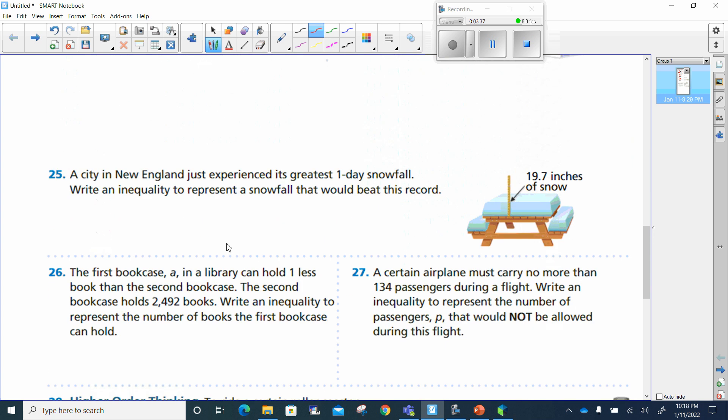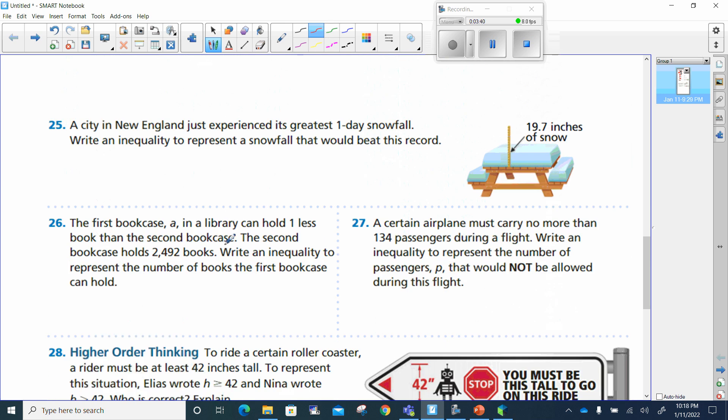All right, so let's move to number 25. A city in New England just experienced its greatest one-day snowfall. Write an inequality to represent a snowfall that would beat this record. Well, snowfall is 19.7 inches of snow. An inequality to represent a snowfall that would beat it. Well, that means that this snowfall is going to be greater, and since it's beating it, it won't be equal to it.